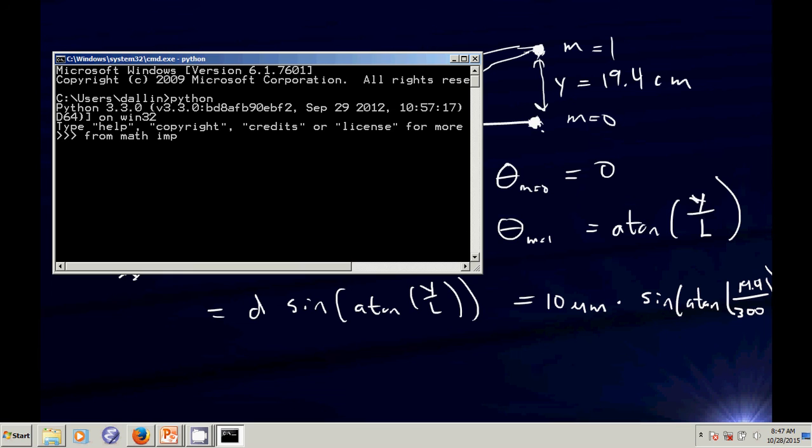Pull in my math functions. Okay. 10 microns. So my only units here are microns. So I'm going to get my answer in microns, alright? 10 times the sine of the arctangent of 19.4 divided by 300. And it tells me 0.645. Or 6.4.